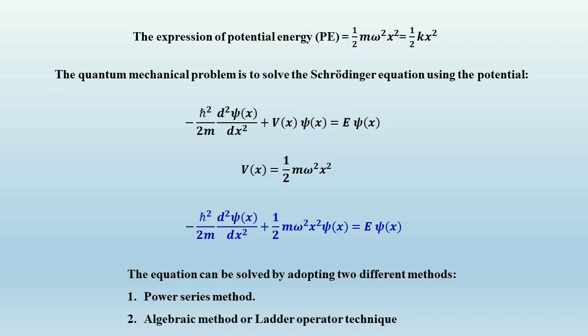Solving this Schrödinger equation gives us the wave functions — the ground state, first excited state, and so on — along with the corresponding energy eigenvalues. This is a quite complex equation that can be solved by two different methods: the first is the power series method, which requires rigorous calculation, and the second is the algebraic method or ladder operator technique, where by using ladder operators we can solve this equation and obtain the wave functions and energy eigenvalues for the different states.